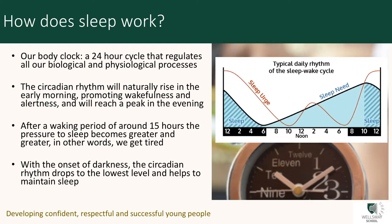Your circadian rhythm responds to it getting dark by telling the brain to make more of a hormone called melatonin, which makes you sleepy. When darkness sets in, that circadian rhythm drops to its lowest level, and that helps to maintain sleep. This is also the reason why light from mobile devices being used at night may alter your circadian rhythm by fooling your brain into thinking it is daytime — which is why you can feel even worse the next day.